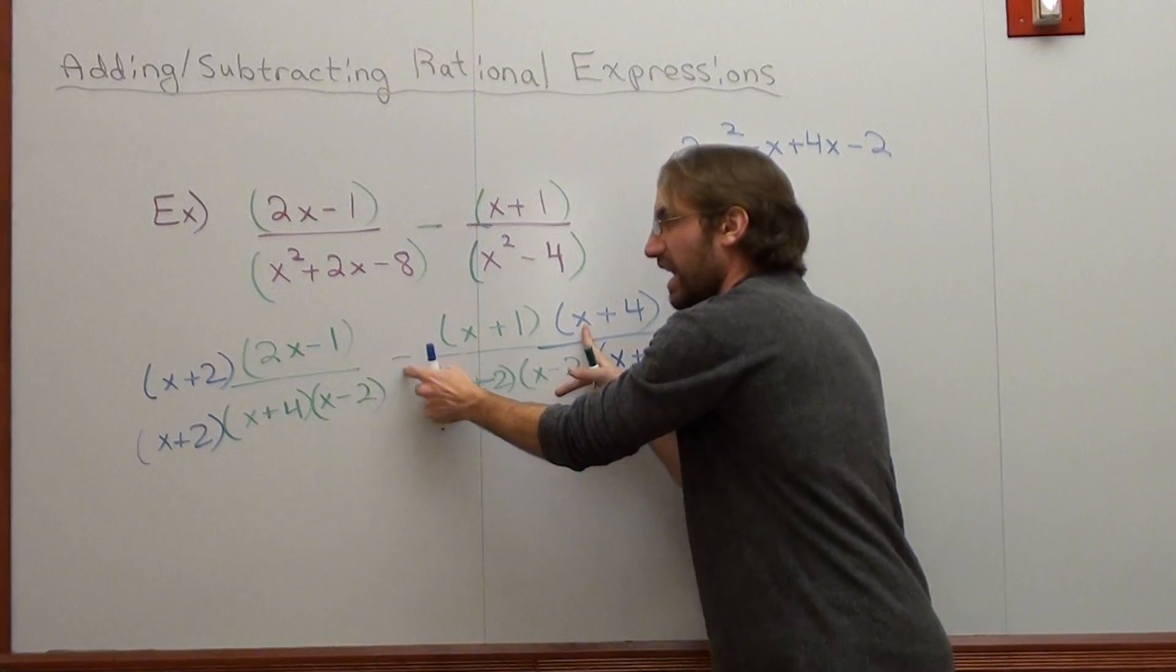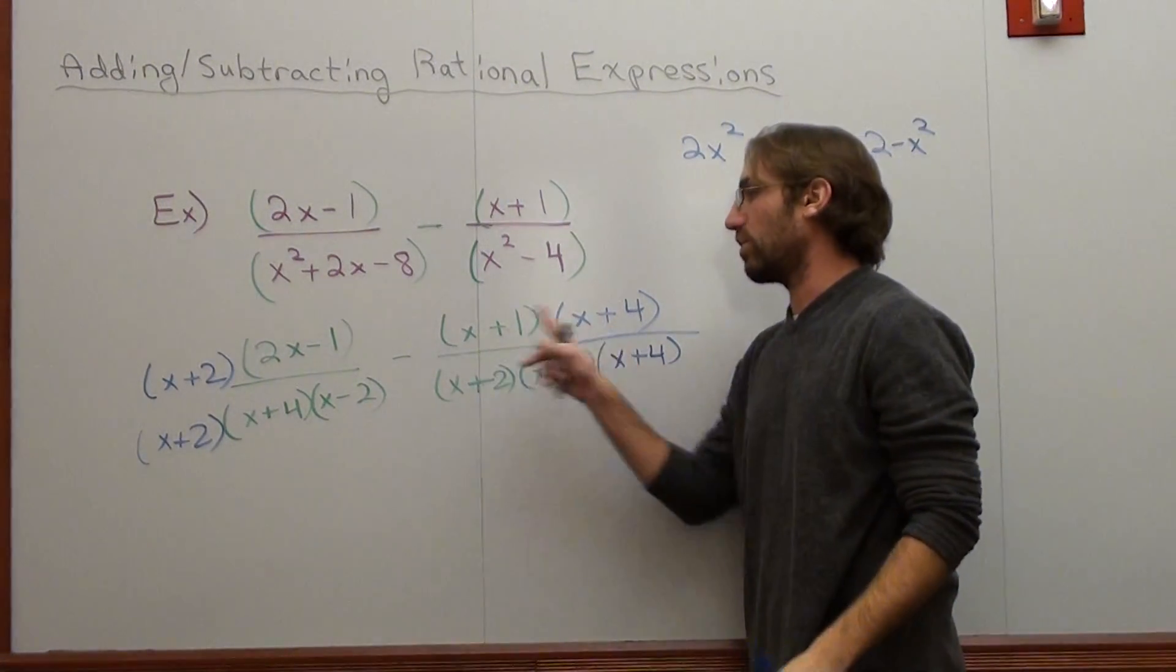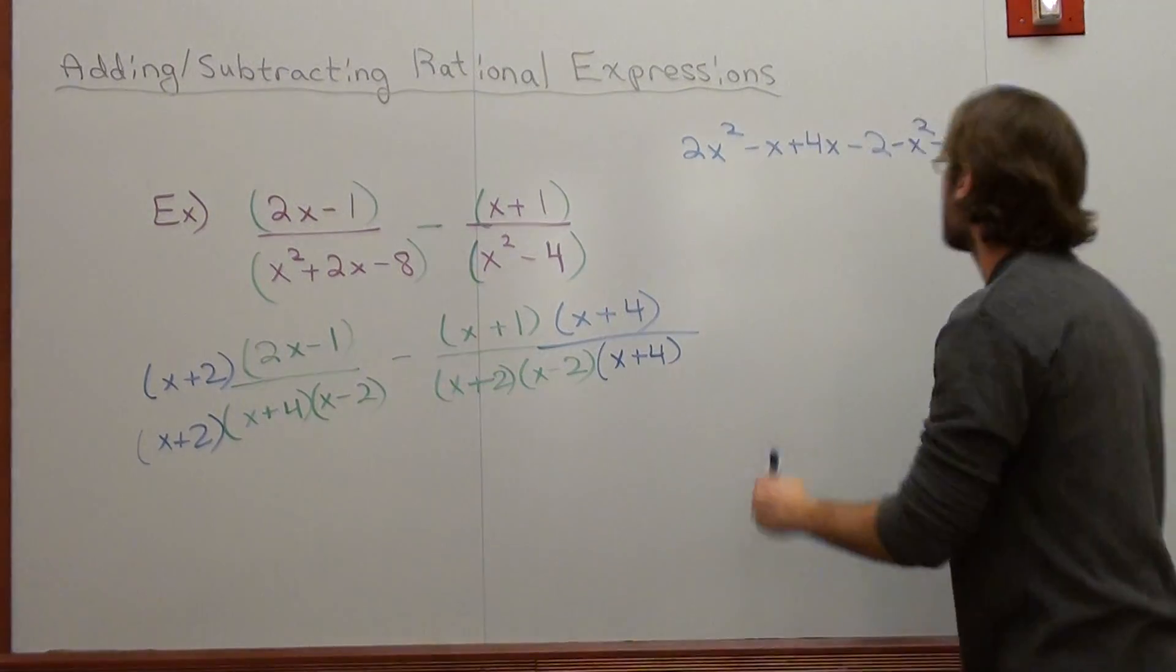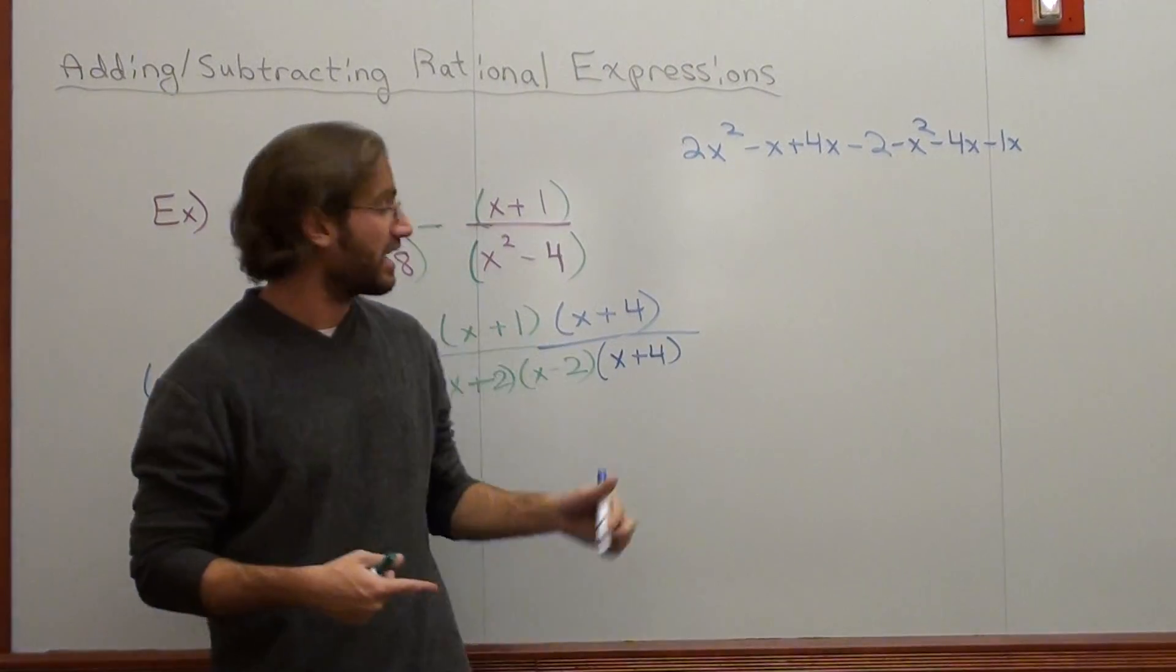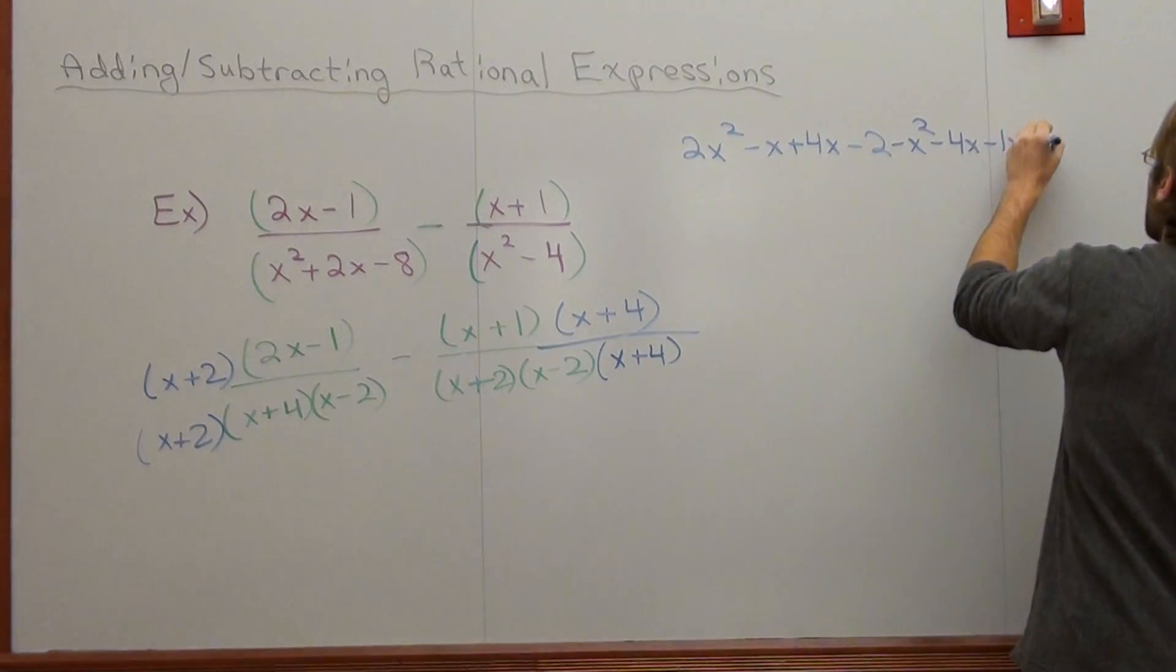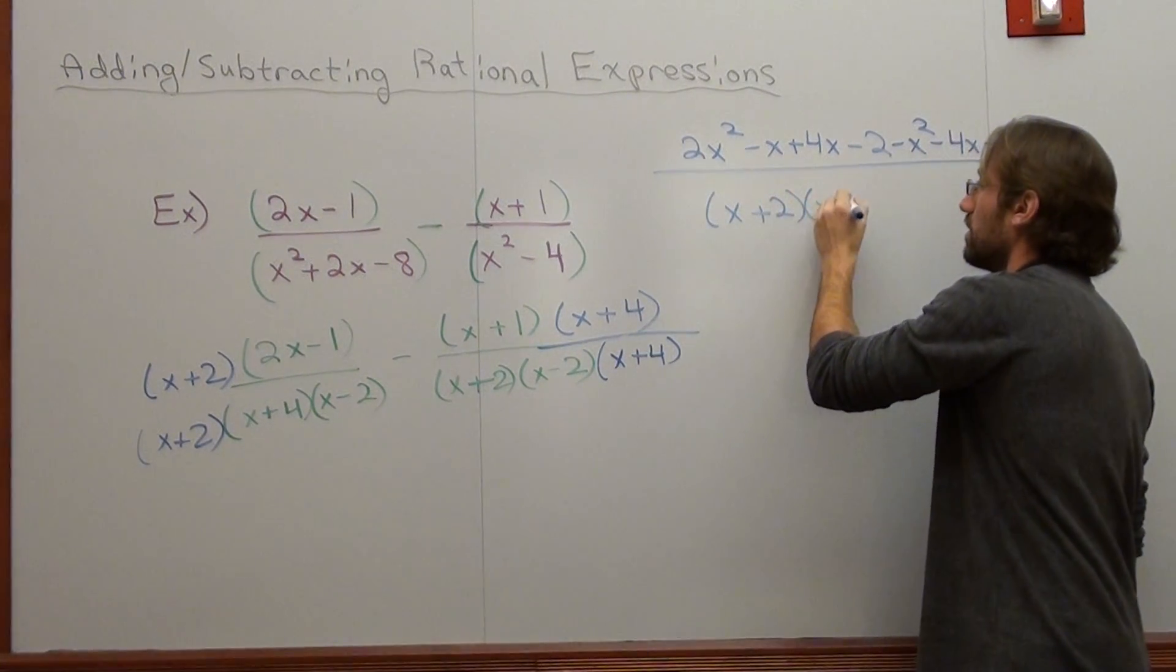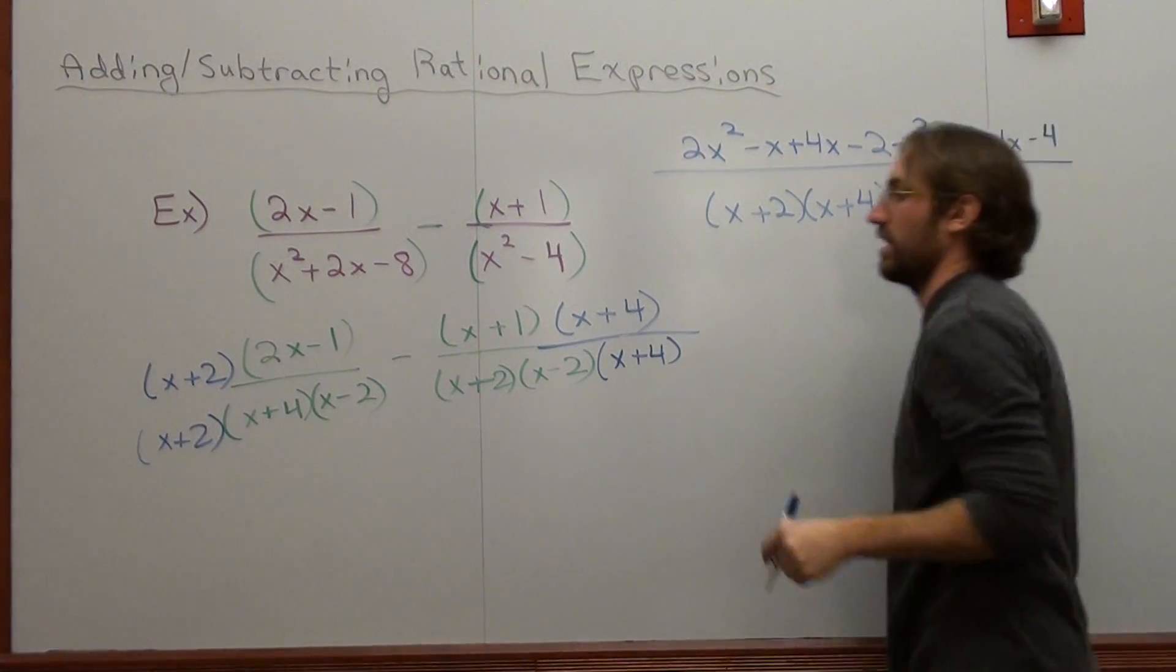x times x is x squared, but it's negative x squared. x times 4 is 4x, but it's negative 4x. 1 times x is 1x, but it's negative 1x. And 1 times 4 is 4, and it's actually negative 4. And it's all over x plus 2, x plus 4, x minus 2.